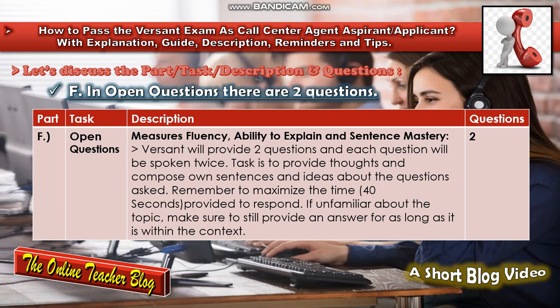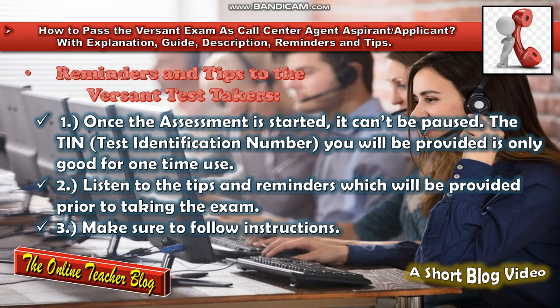In Part F, Open Questions, there are two questions. This section measures fluency, the ability to explain, and sentence mastery. Versant will provide two questions and each question will be spoken twice. The task is to provide thoughts and compose ideas about the questions asked. Remember to maximize the 40 seconds provided to respond. Even if you are unfamiliar with the topic, make sure to still provide an answer as long as it is within context.